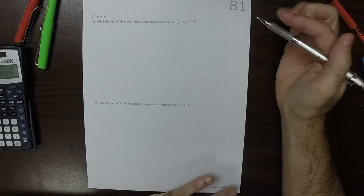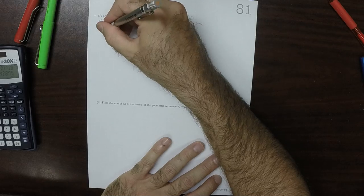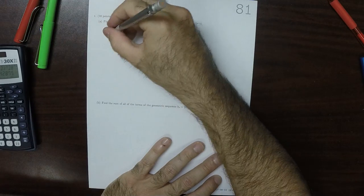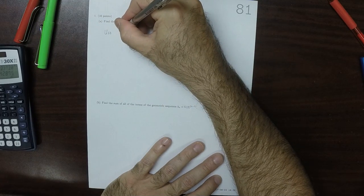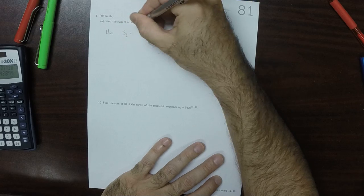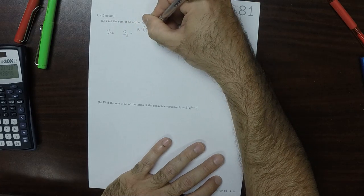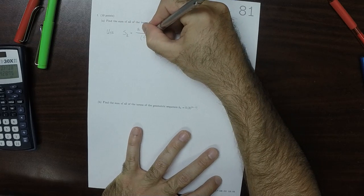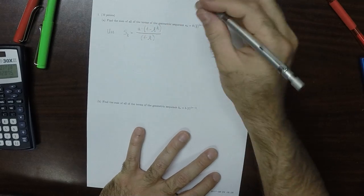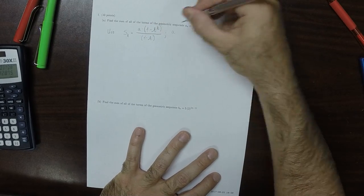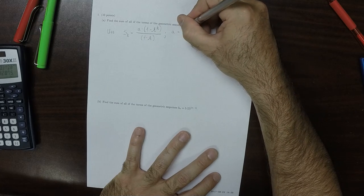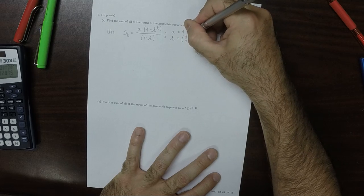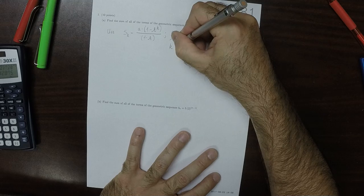So what I'm requesting that you do is I want you to use the formula S_K equals A multiplied by 1 minus R to the K over 1 minus R. And I want you to use A is 8, R is 4/5, and I want you to take the limit as K goes to infinity.